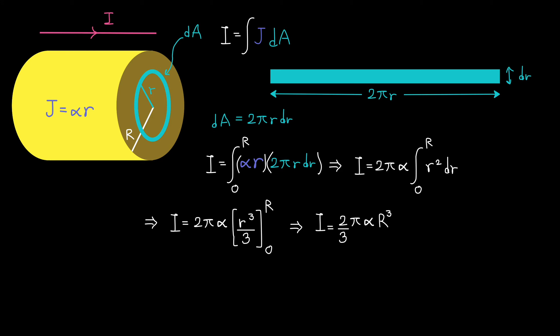First, we simplify the expression and pull the constants outside of the integration sign. 2 pi alpha, those are constants. We pull those out. And we have a factor of r multiplied by another r, so that's r squared. So the integral becomes 2 pi alpha integral of r squared dr from 0 to capital R. The integral of r squared is r cubed divided by 3. We evaluate it from 0 to capital R.